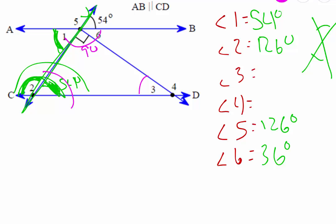If we take 180 degrees and subtract away the 90 from here and subtract away the 54 from here, that'll give us what angle three is, which is actually 36 degrees.